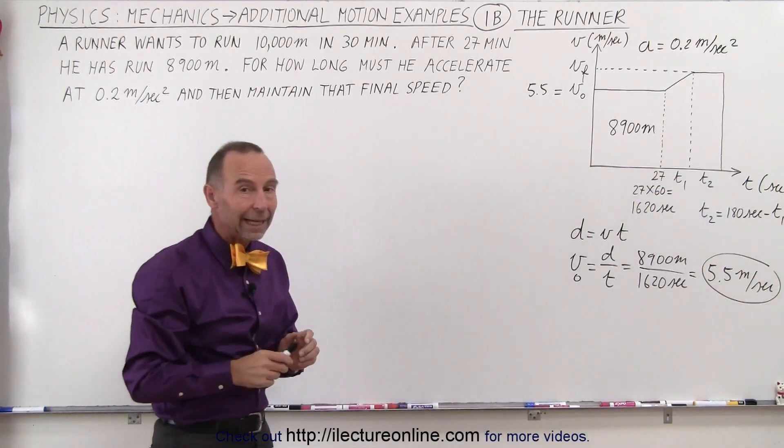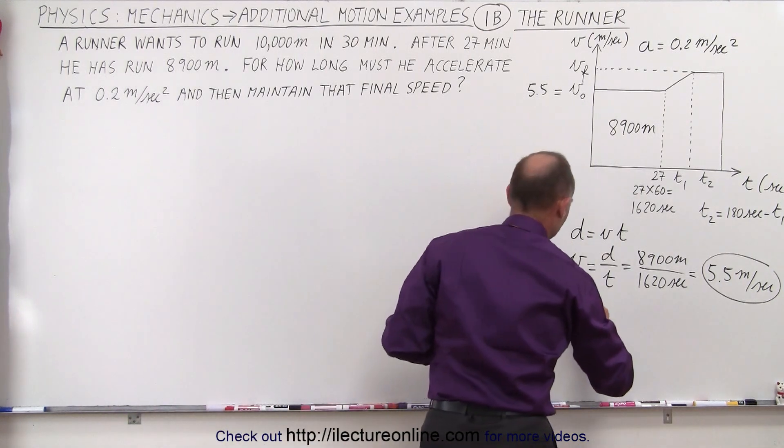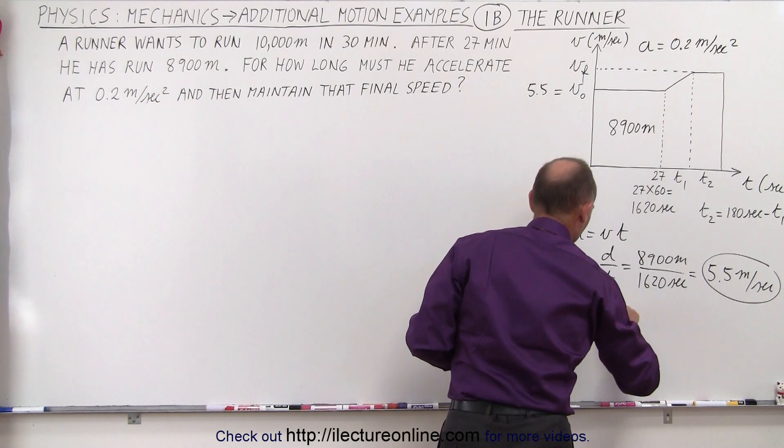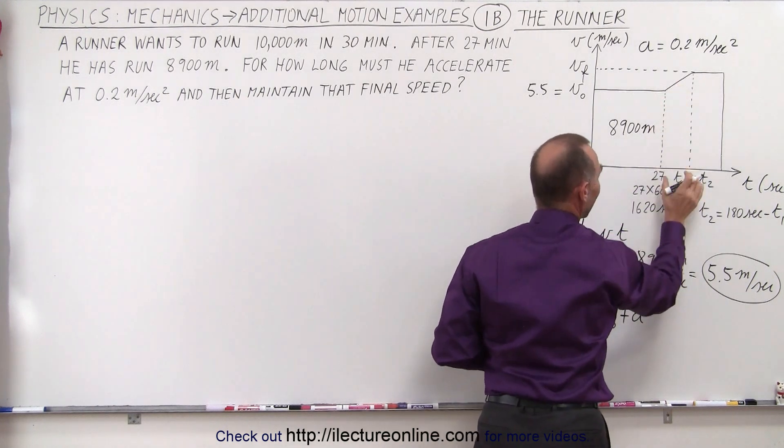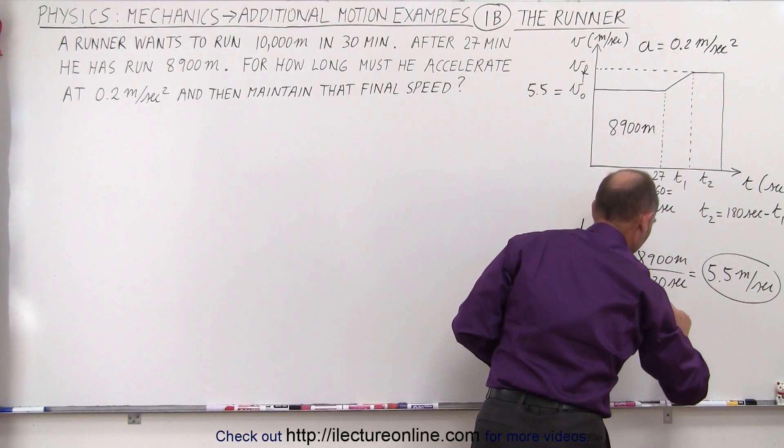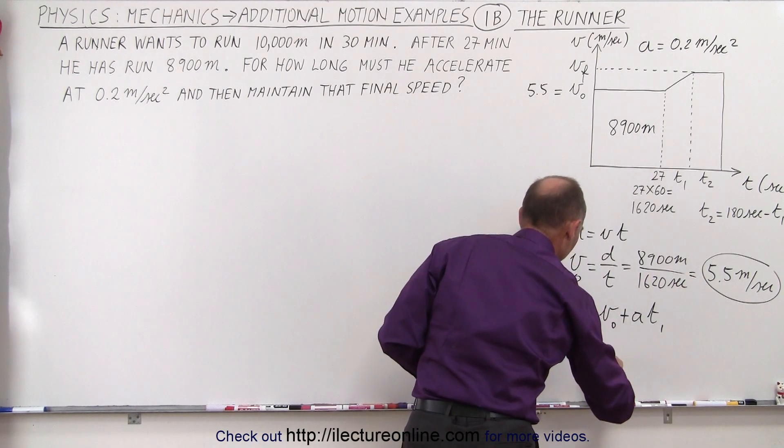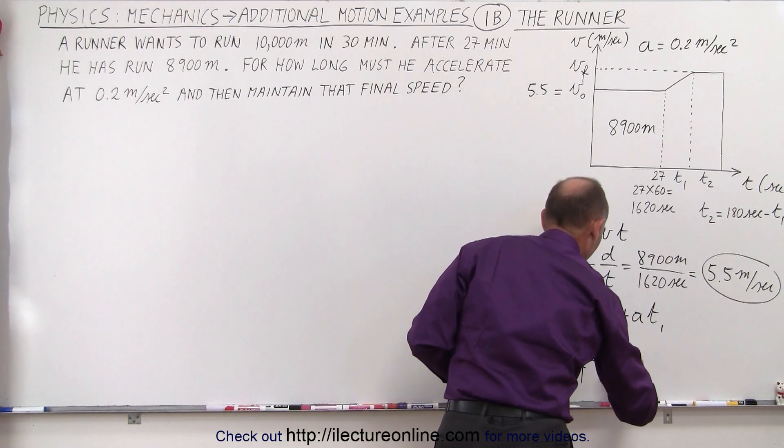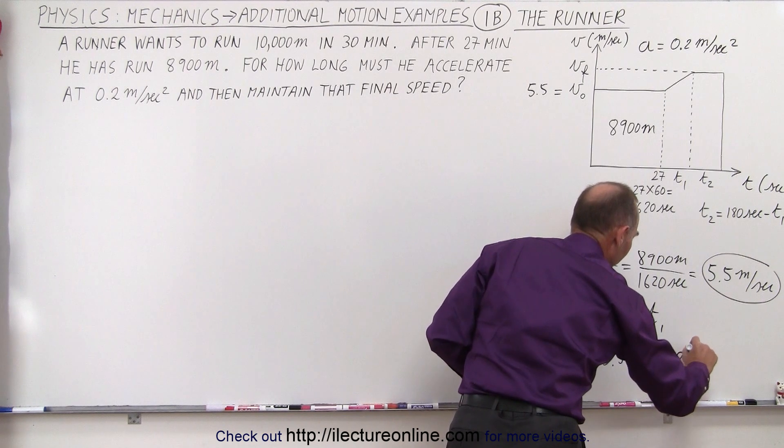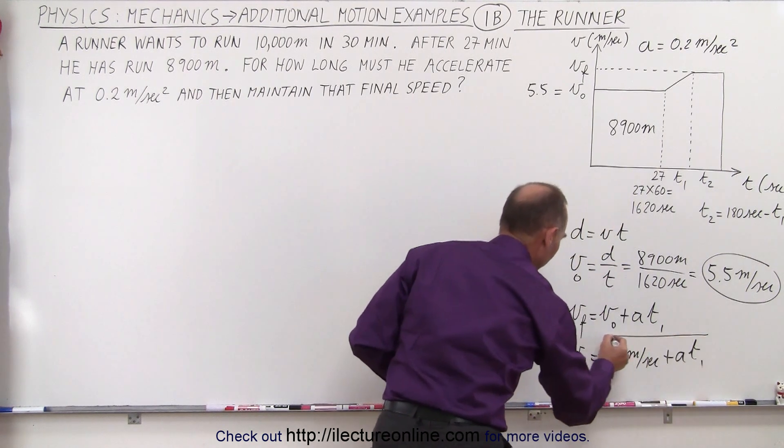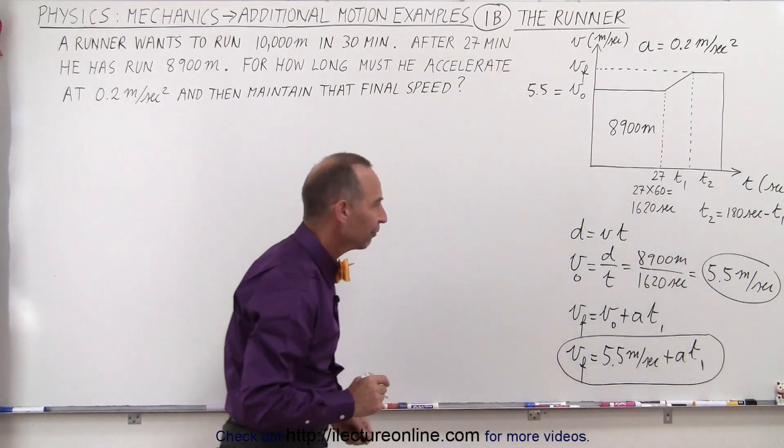Now we want to calculate the final velocity in terms of the initial velocity. So we can say that final velocity is going to be equal to the initial velocity plus the acceleration times the amount of time he spends doing the acceleration. Let's call that T1. So since we know what v initial is, we can say that v final is going to be equal to v initial, which is 5.5 meters per second, plus the acceleration times the time he spends doing the acceleration. So here now we have an expression for v final as well as we have for v initial.